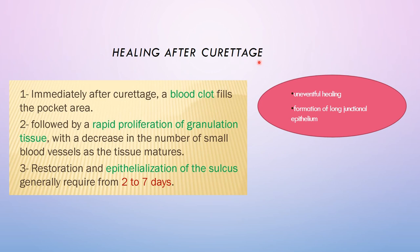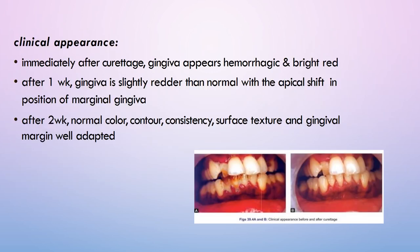Healing after curettage is mainly achieved by formation of a long junctional epithelium and is generally uneventful. Immediately after curettage, a blood clot fills the pocket area, followed by rapid proliferation of granulation tissue with a decrease in vascular supply as tissue matures, and then re-epithelialization, which generally requires two to seven days. Clinically, gingiva appears hemorrhagic and bright red immediately after; after one week, slightly redder with an apical shift; and after two weeks, normal color, contour, consistency, and well-adapted gingival margin.